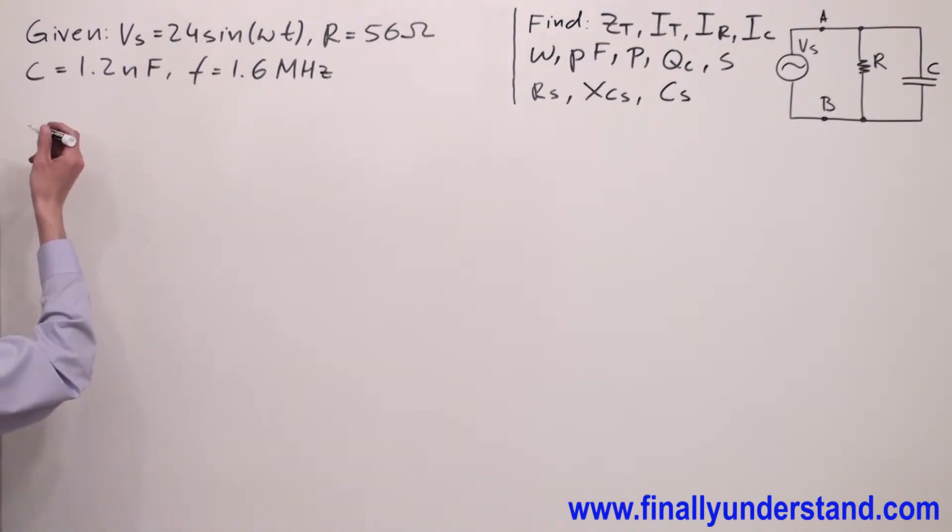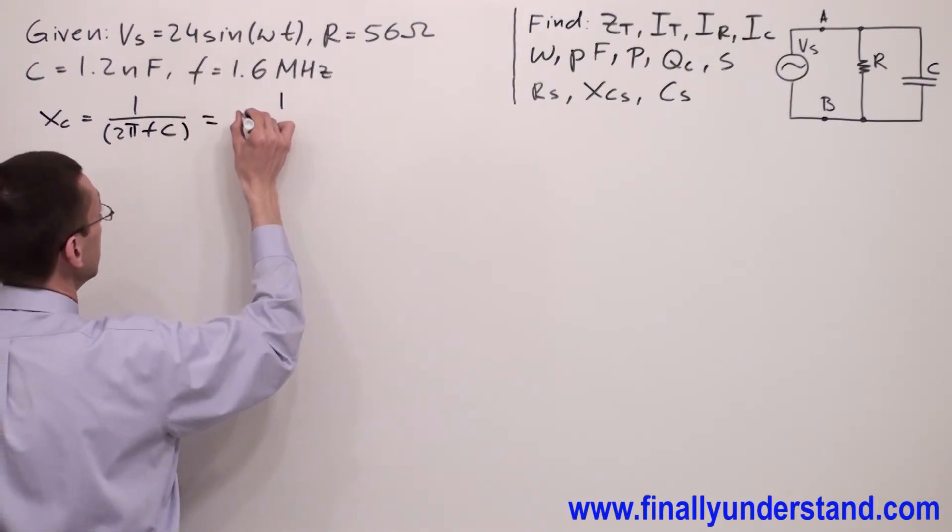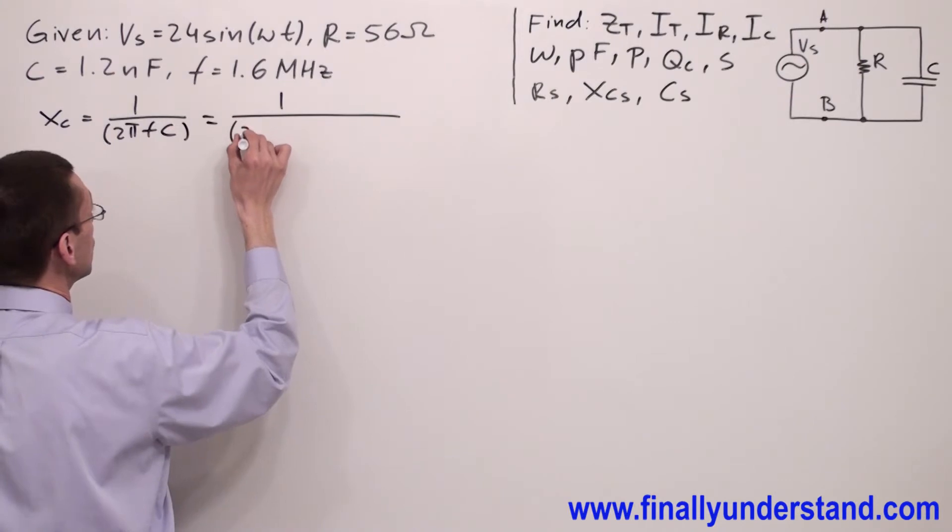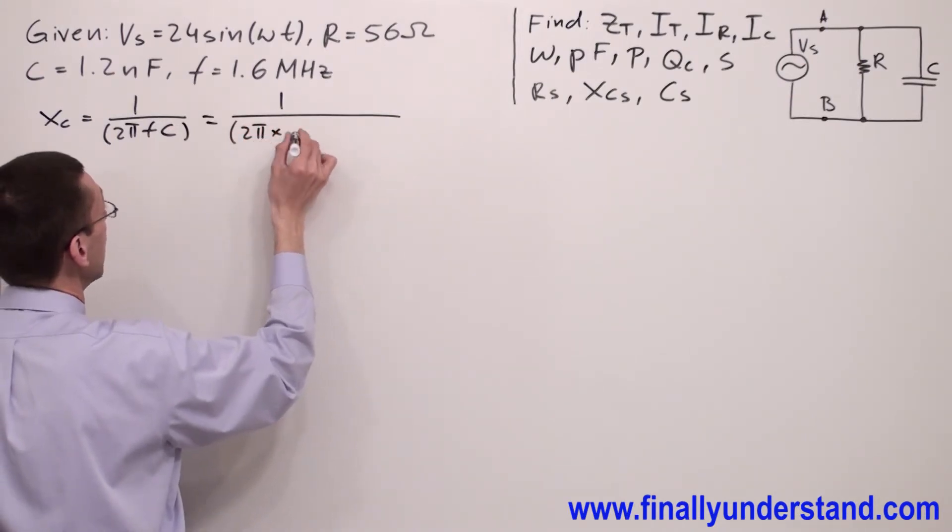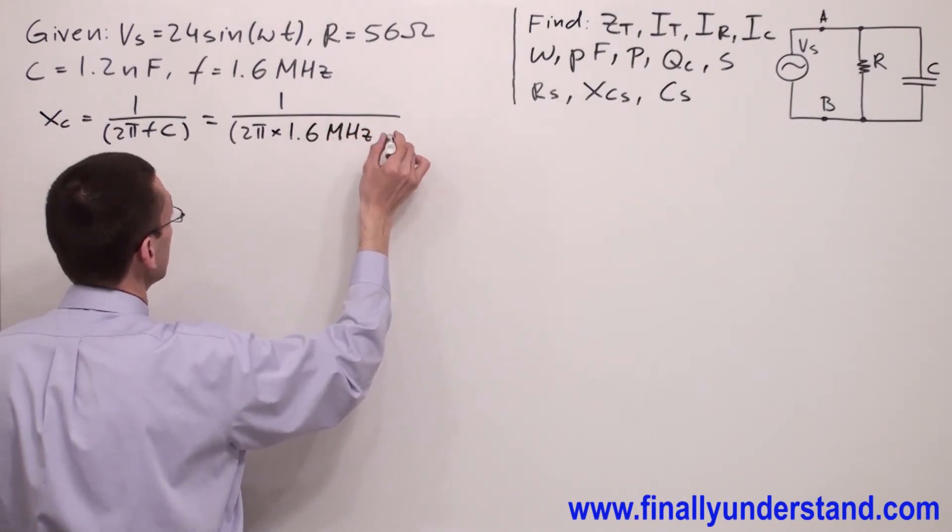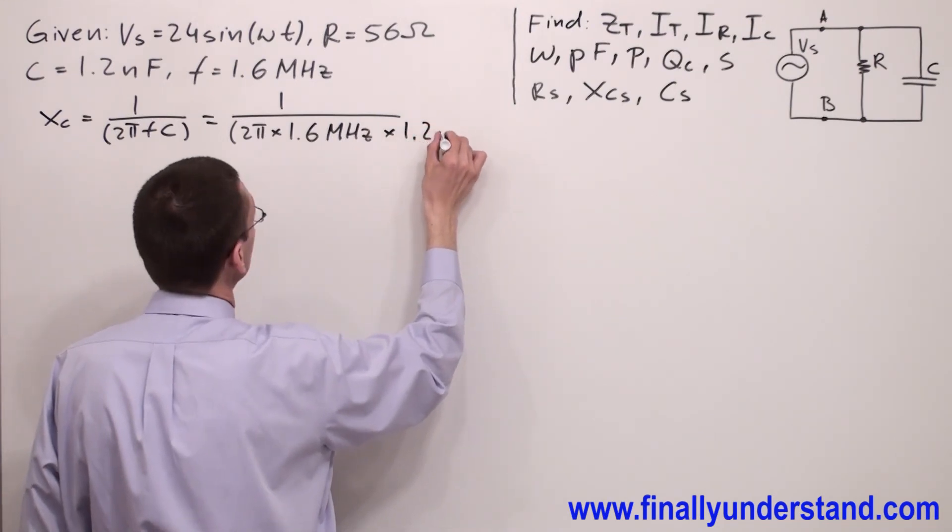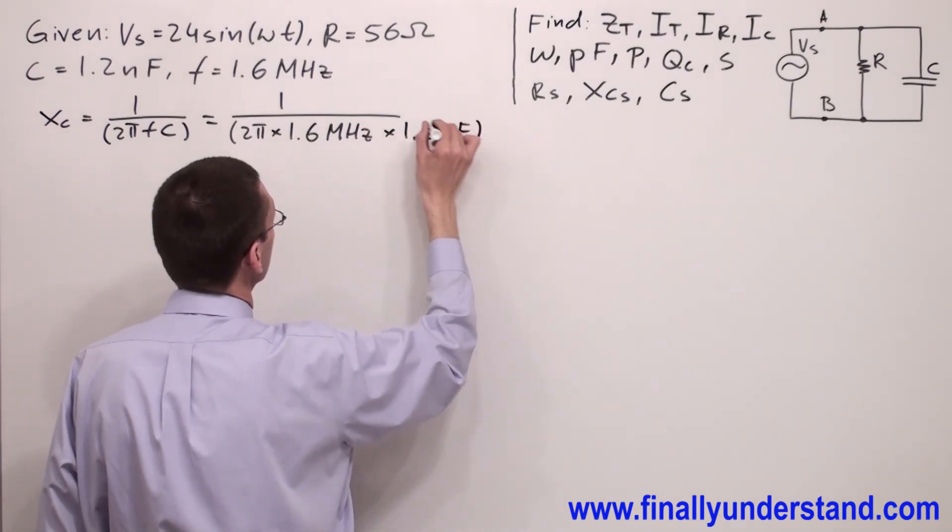So let's write the formula first for capacitive reactance. Xc equals 1 over 2πFC. Since we have given frequency, this equals 1 divided by (2π times 1.6 megahertz times the capacitance 1.2 nanofarads).